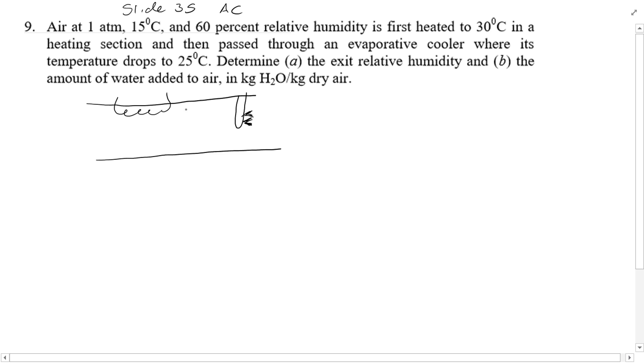A series of values are given. At point 1, we're given a temperature of 15 degrees C and a relative humidity of 60%. At point 2, we're given a temperature of 30 degrees C after the air is heated. And at point 3, we are given a final temperature which drops slightly to 25 degrees C.